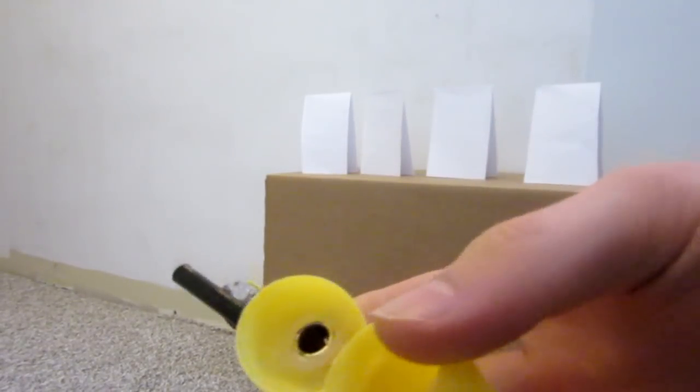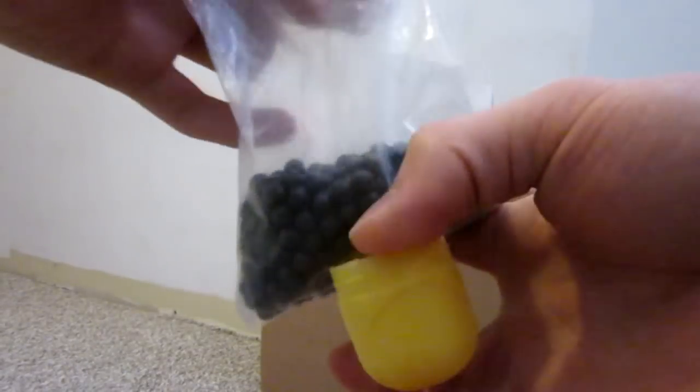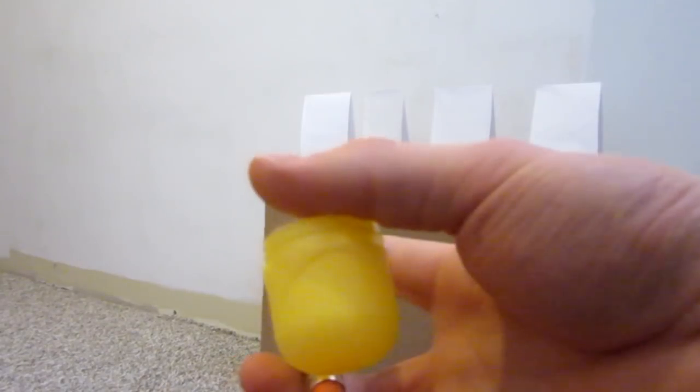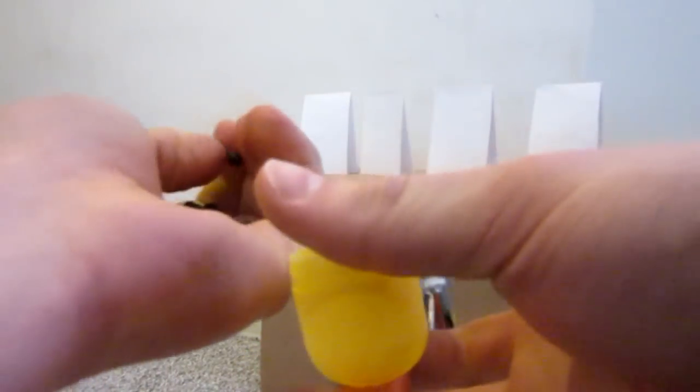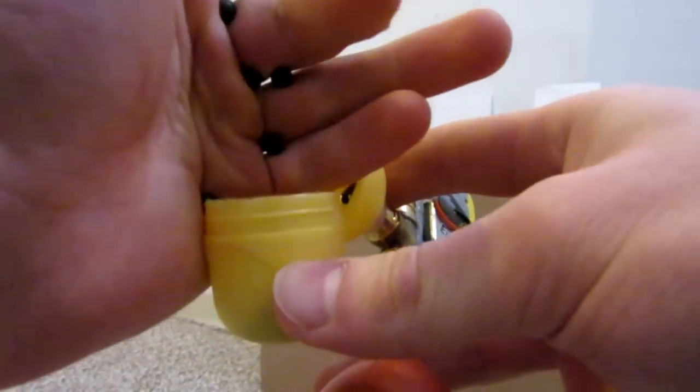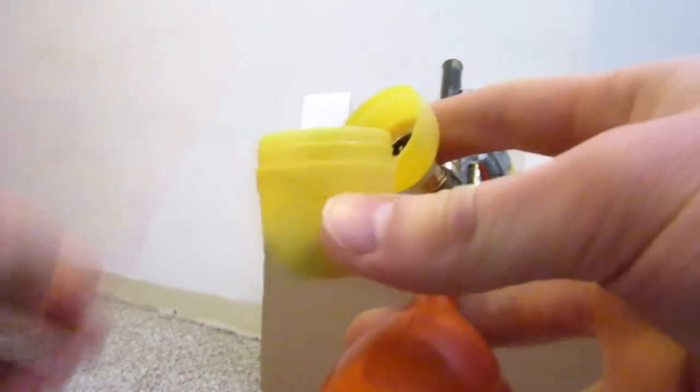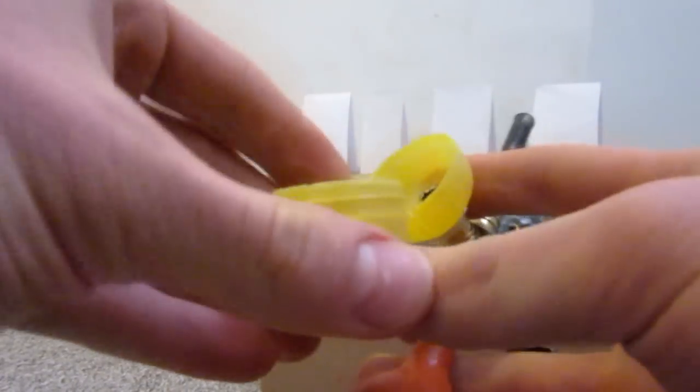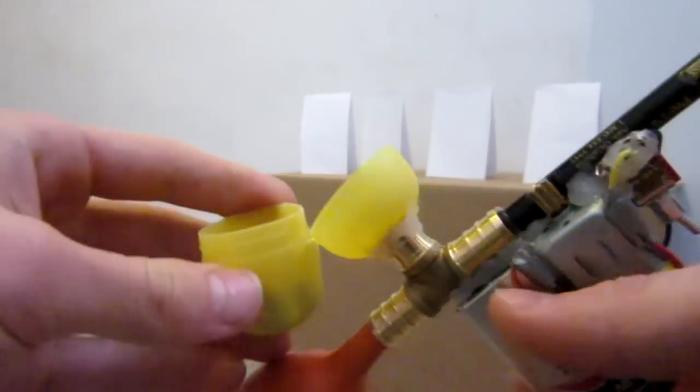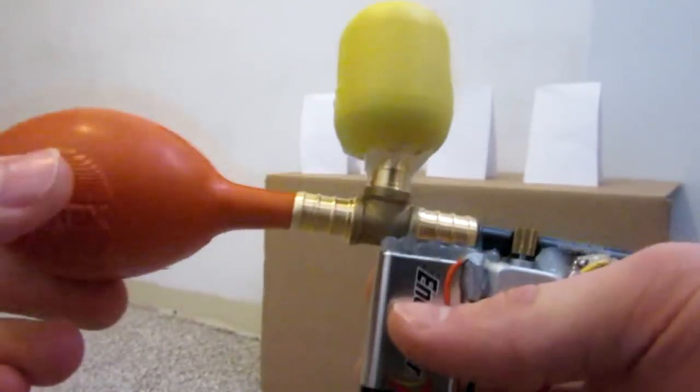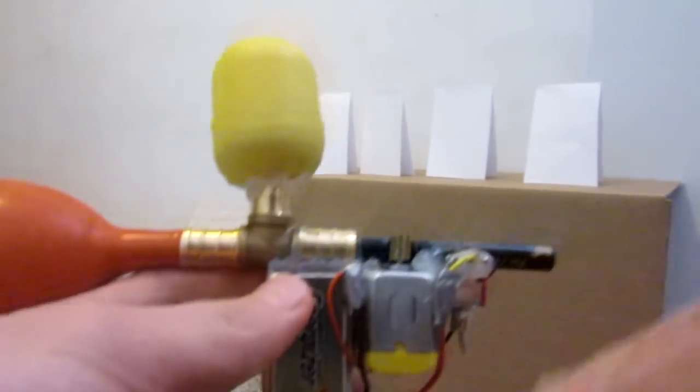So first we're gonna go ahead and load it up. So I got my BBs here, and all you gotta do, take a nice big old handful of them. Alright, and then just go ahead and dump them in the yellow container. Just like that. Go ahead and add some more. As you can see, now the hopper is pretty darn full. Then go ahead and close it. And now let's get to the shooting test.